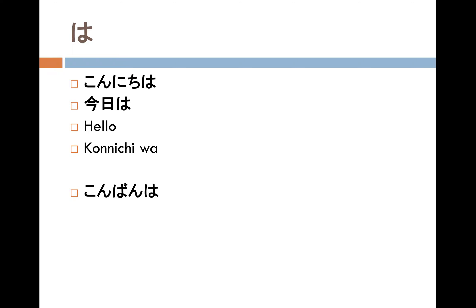Another example is 'konbanwa.' Again, 'konbanwa' uses Particle-wa, so you write hiragana 'ha' but pronounce it 'wa.' In kanji it looks like this — konbanwa. 'Konban' is the subject, meaning 'tonight' or 'this evening.' After the subject you put Particle-wa. It means 'how is this evening?' — and it became the greeting 'good evening,' konbanwa.